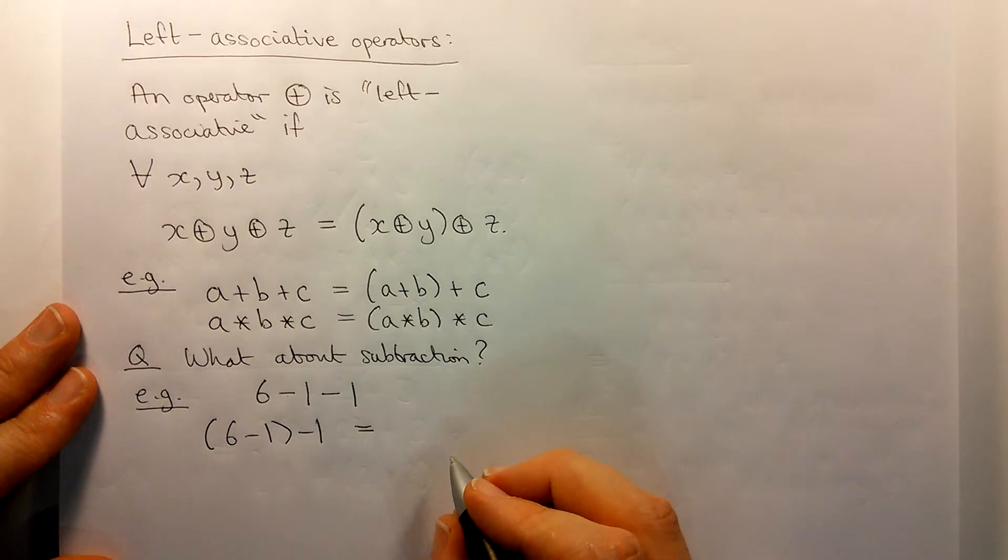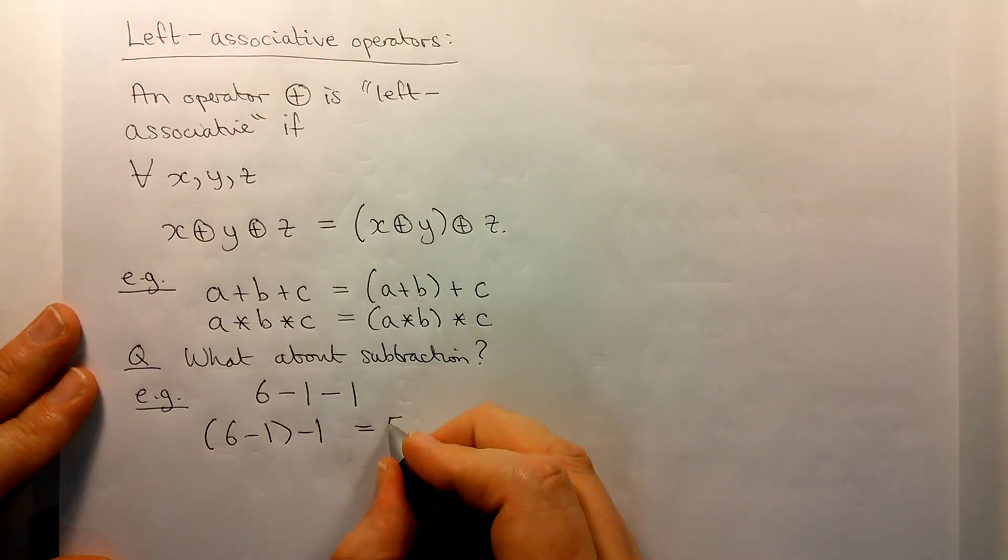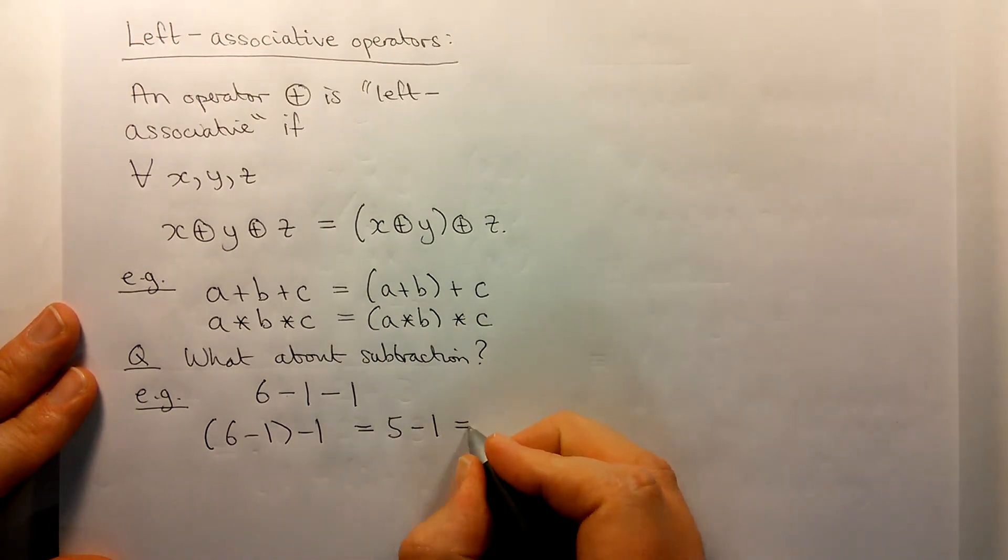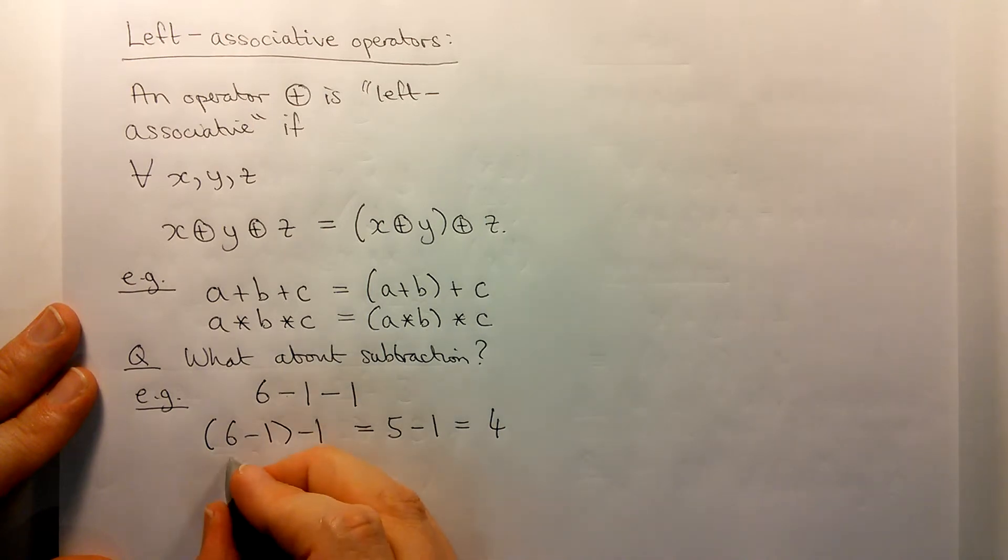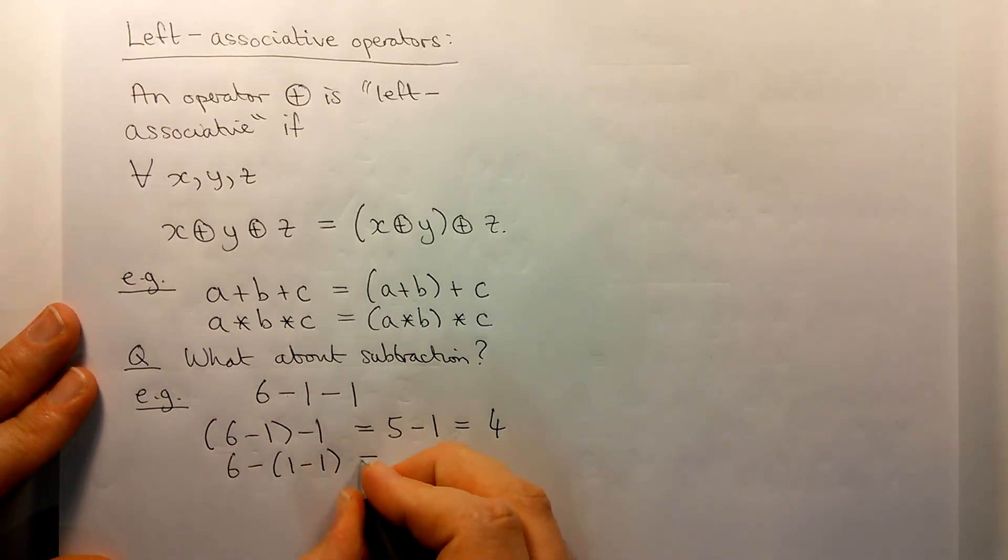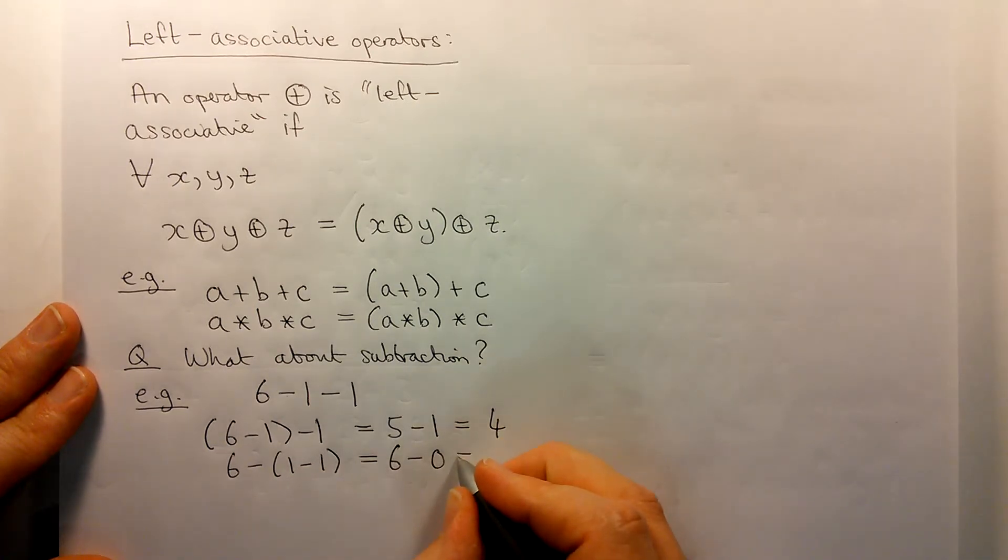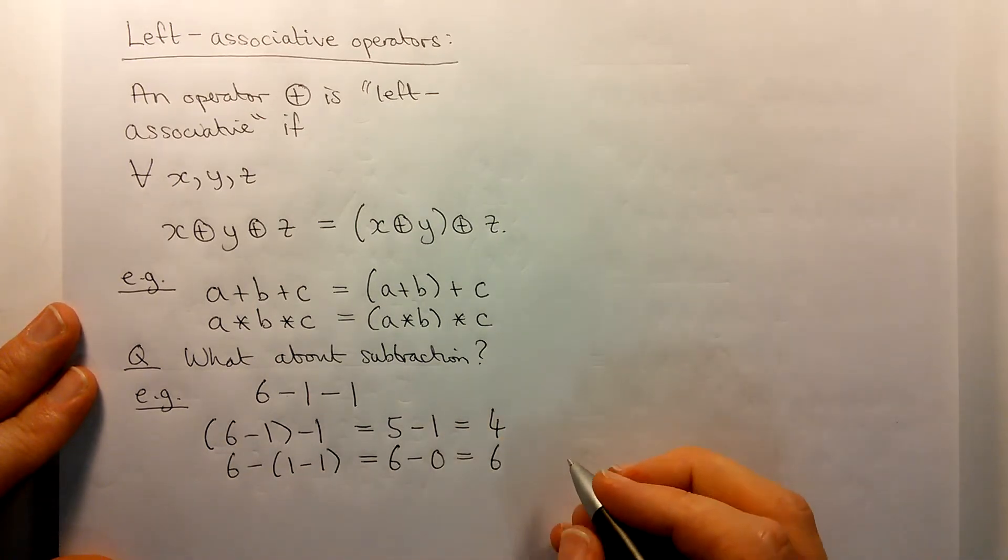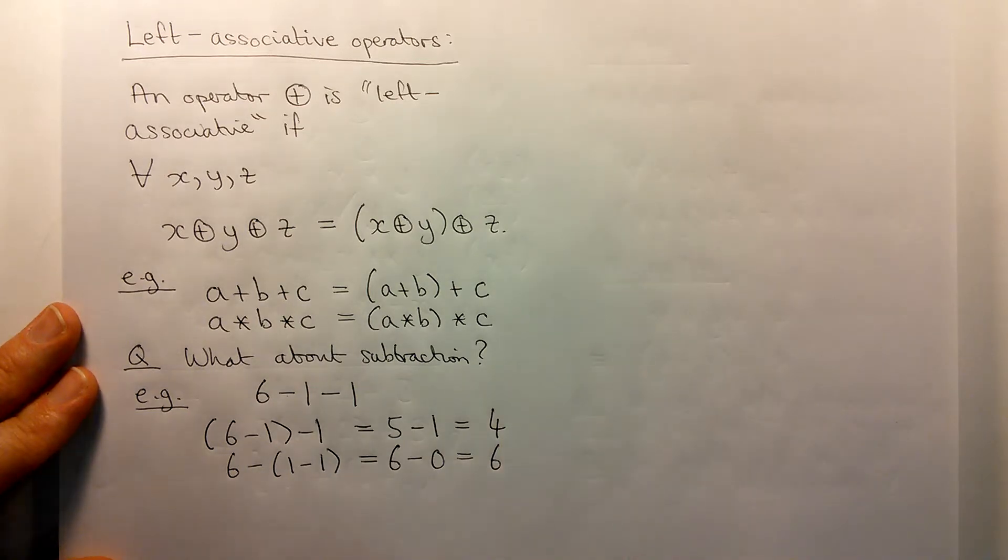So if we perform the operations in this order, then we end up with 5 minus 1, which is 4. If we perform the operations in the other order, we end up with 6 minus 0, which is 6. And these are not equal. So even in ordinary mathematics, it matters whether we treat subtraction as left or right associative.